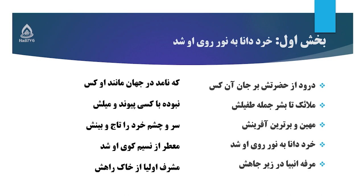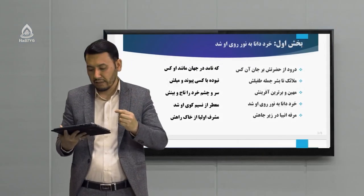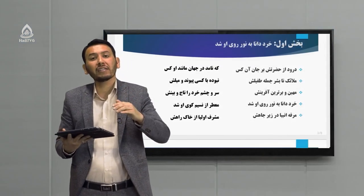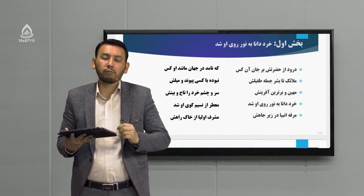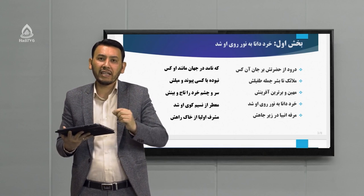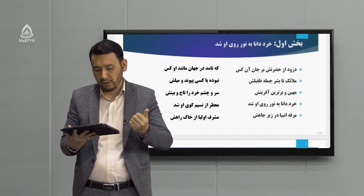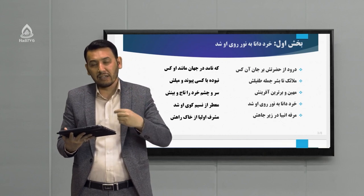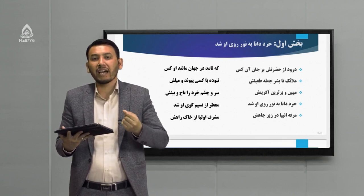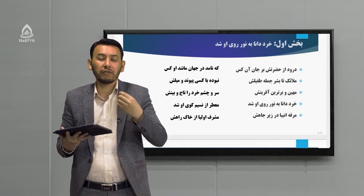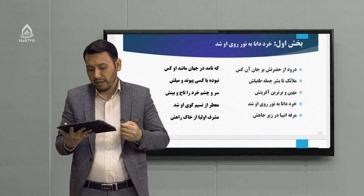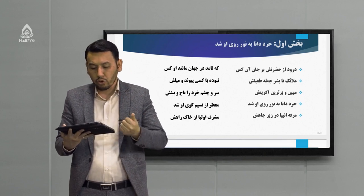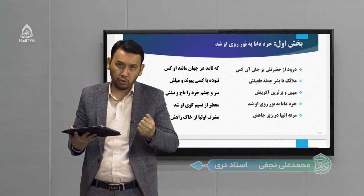مهین به معنای بزرگترین است، صفت تفضیلی است. برترین به معنای کسی که از مقام‌های عالی برخوردار است. یعنی پیامبر بزرگترین و بهترین انسان‌ها و موجودات دنیا است. خرد یعنی عقل، و عقل انسان تمام توانایی‌ها و تمام ویژگی‌های خود را از پیامبر مکرم اسلام گرفته است.